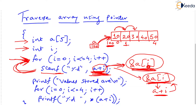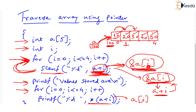Now how do you print all these values? Check the next part of the program where we print using a for loop. We are printing '*(a plus i)', but just remember this is the same as 'a[i]' — not the same as '&a[i]'. Because 'a plus i' gives you the address of the ith element, and the asterisk before that gives you the value. So the output from this for loop will be 10, 20, 30, 40, 50.